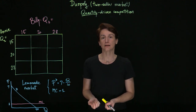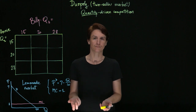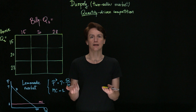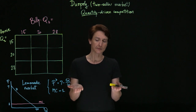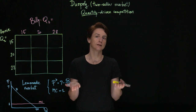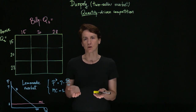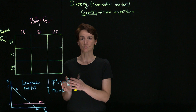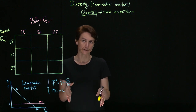When we last talked about Annie and Billy, we said that they were competing in the market for lemonade on their street. We said that each of them decides what price to set, and consumers will then compare the two prices, and because they see the lemonade as equivalent, regardless of who's making it, they will buy from the cheapest source. Another way we can think about their competition is to say that instead of deciding what price to set, they're going to decide how much lemonade to make.